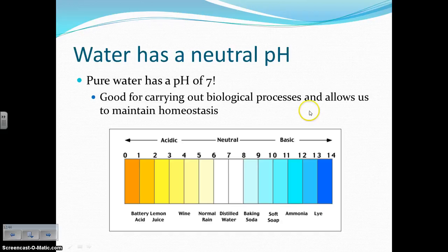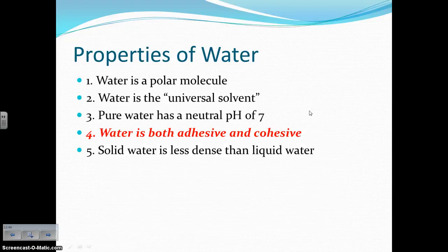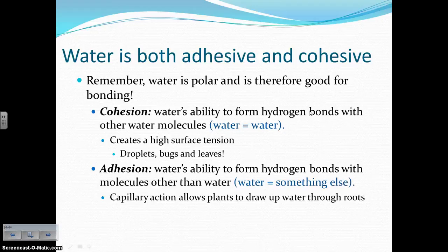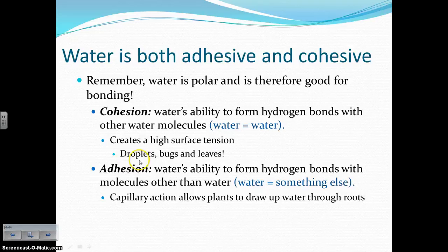Property number four: water is both adhesive and cohesive — we saw this in our properties of water lab where we dropped water onto a penny. Water is polar, which means it's really good for bonding — to itself and to other molecules. Cohesion describes water's ability to form hydrogen bonds with other water molecules, so water bonding to water. This creates what's called surface tension, which is basically like an invisible membrane that forms around a droplet of water. This allows droplets to form on leaves and allows bugs to walk on the surface of water — all due to cohesion.